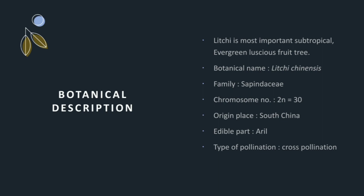Botanical description: Lychee is the most important sub-tropical evergreen luscious fruit tree. Botanical name: Litchi chinensis. Family: Sapindaceae. Chromosome number: 2N equals 30. Origin: South China. Edible part: Aryl. Type of pollination: Cross-pollination.